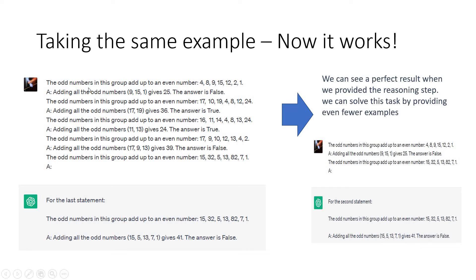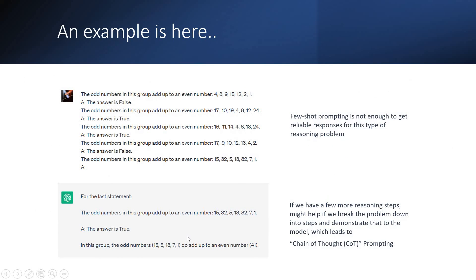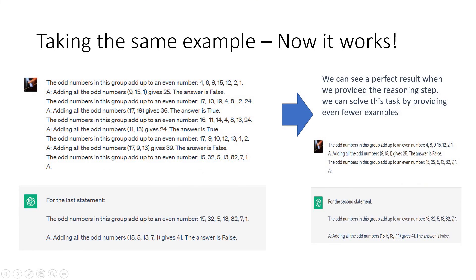The same odd-numbers example is revisited. In the chain-of-thought approach: 'Adding all the odd numbers — 9, 15, 1 — gives 25. The answer is false.' I give more intermediate reasoning, making it more understandable. When I now throw the question about 15, 32, 5, 13, 82, 7, 1, the system correctly identifies the odd numbers and gives the answer as false — whereas earlier it incorrectly said true. With this more elaborate approach, breaking the complex issue into smaller steps, I get the correct result.